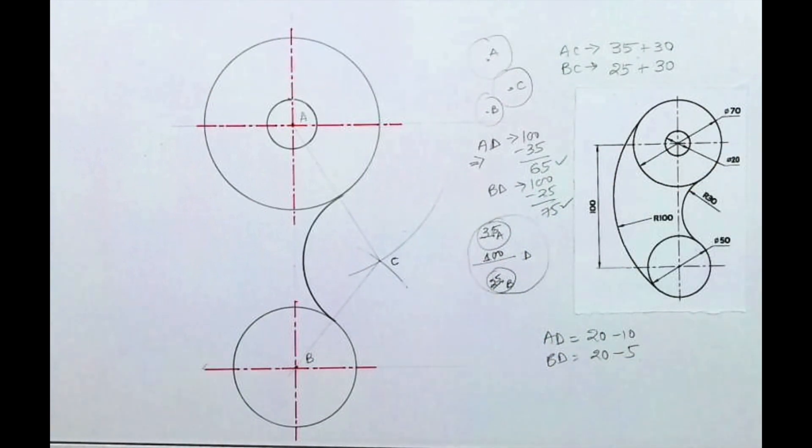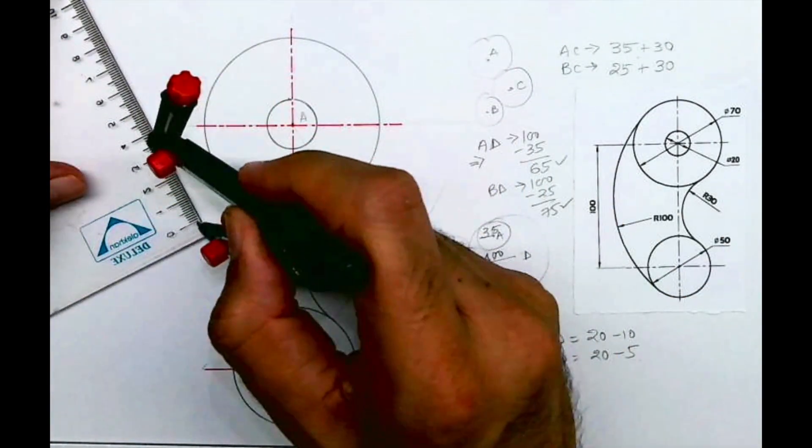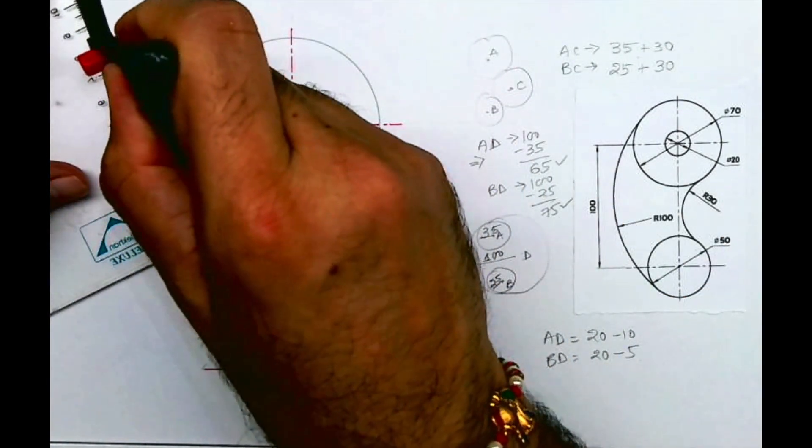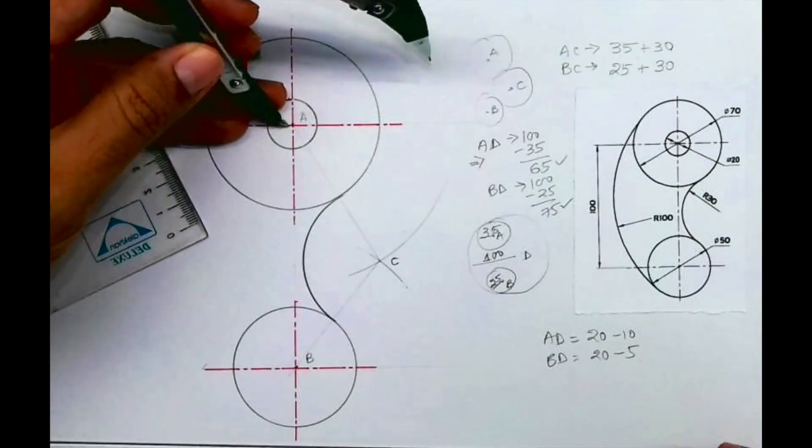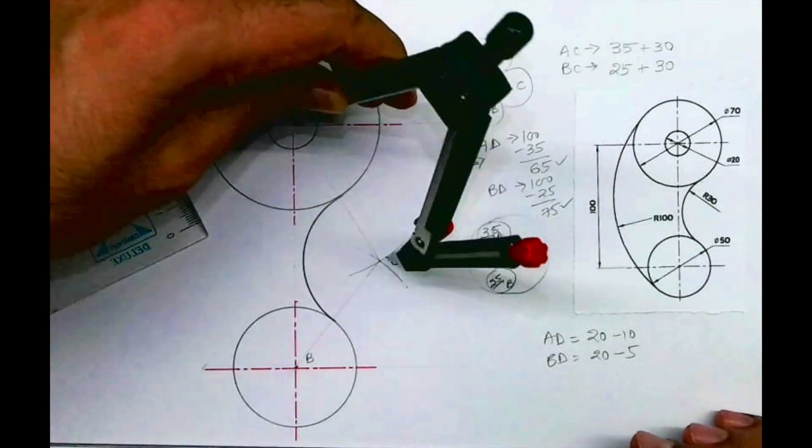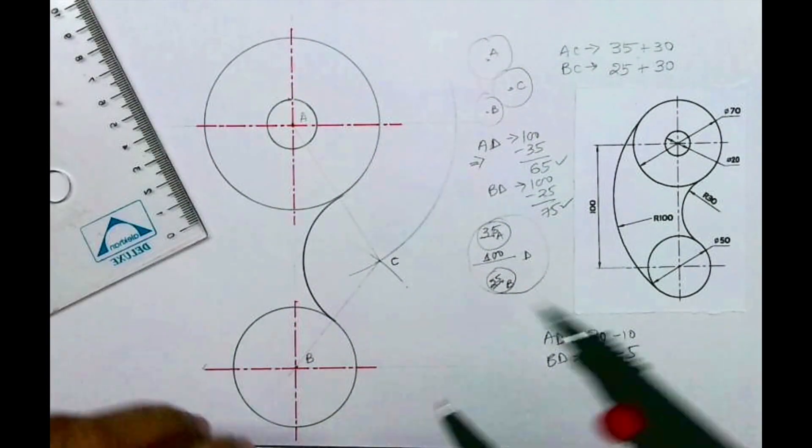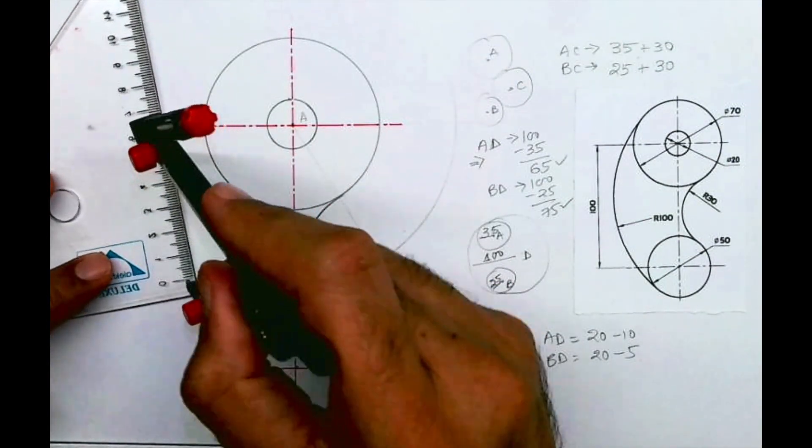I will cut 65 and 75 from A and B respectively. From A, I will cut 65, and from B, I will cut 75.